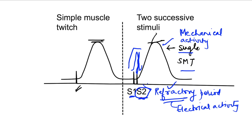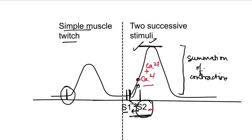Before ending, here is a question: the increase in height of contraction seen with the second stimulus in these graphs — is it violating the all-or-none law? You can type your answers in the comment section below. Thanks for watching. If you liked it, press the like button, share the video with others, and don't forget to subscribe to the channel Physiology Open.